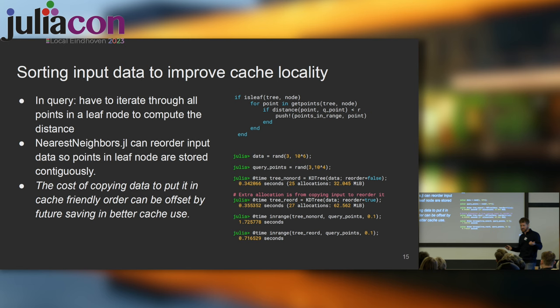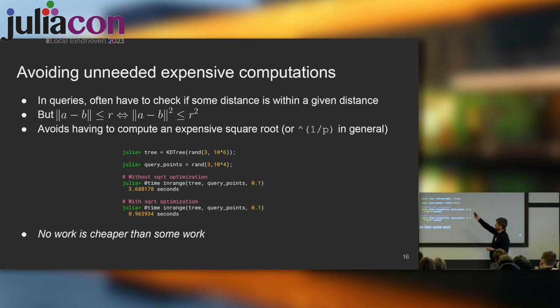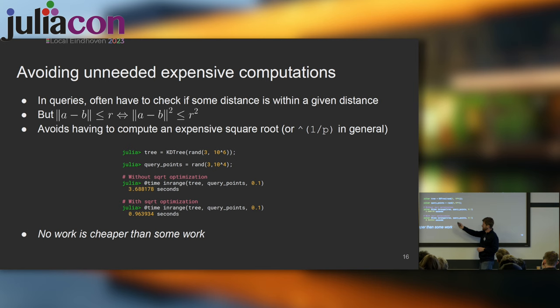Another optimization: avoid unnecessary computation. When checking if a distance is within a given radius, checking that |a - b|² ≤ radius² is equivalent to checking |a - b| ≤ radius. For Euclidean distance you normally compute a square root at the end, which is expensive. You can just skip the square root and square the radius instead. Disabling this optimization in the code produced a runtime of 3.6 seconds; with the optimization it took 0.9 seconds. No work is cheaper than some work — sometimes you can skip things that aren't actually needed.